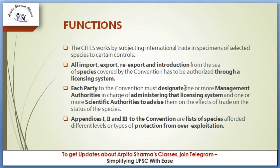Each party to the Convention must designate one or more management authorities in charge of administering the licensing system, and one or more scientific authorities to advise them on the effects of trade on the status of the species. The management authority administers the licensing system, while the scientific authority advises the management authority. If the scientific authority finds that trade in a certain species is having an adverse impact on its conservation status, it may advise the management authority to discontinue that trade.